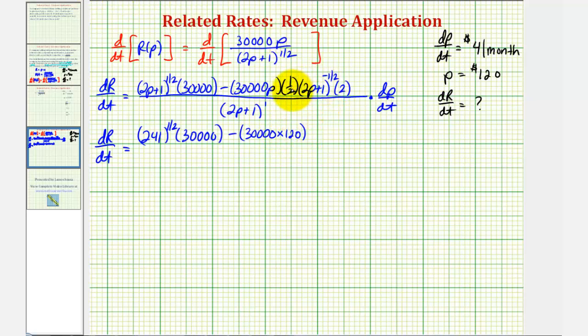Here, notice that the one-half and the two simplify to one. And since 2p plus 1 is equal to 241, we have 241 to the negative one-half power. All this is going to be divided by just 2p plus 1 or 241. I'm going to multiply this by dp dt, which is four.